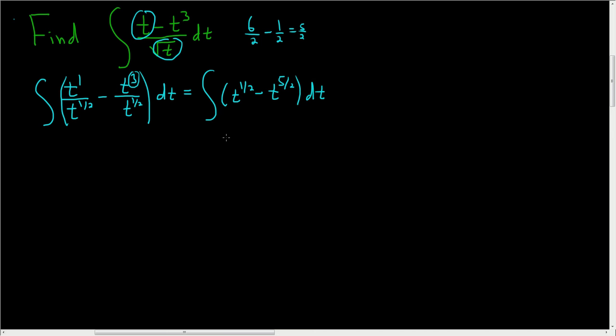And now we're ready to integrate, we just have t to a power in both cases. So this will be t. When you add 1 to the one-half, you get three-halves. And we're supposed to divide by three-halves. Now instead of dividing by three-halves, you can multiply by the reciprocal, so two-thirds.